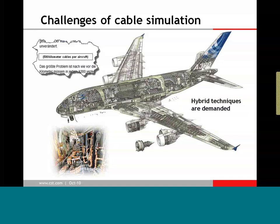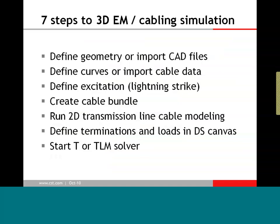If we try to model everything with a 3D simulation tool, we would definitely fail because of memory and time. What I would like to demonstrate now is the seven steps you have to take in order to get to a combined 3D and cable simulation. The first thing is in which way you are able to define the geometry or how to import CAD files. Then, how we are able to define a curve or import cable data to create a more complex cable structure inside of an enclosure.